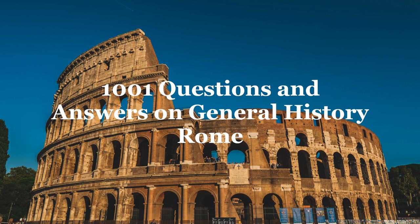Seventeen: When was Rome founded and where? 753 BC, on the river Tiber fifteen miles from its mouth. Eighteen: What did the Romans accept as the early history of Rome? A series of legends. Nineteen: What is the legend of the birth of the founder of Rome? Romulus and his twin brother Remus, children of the vestal virgin Rhea Silvia and the god Mars, were thrown into the Tiber. They were cast ashore at the foot of Mount Palatine, nursed by a wolf, and finally rescued by a shepherd and brought up by him.